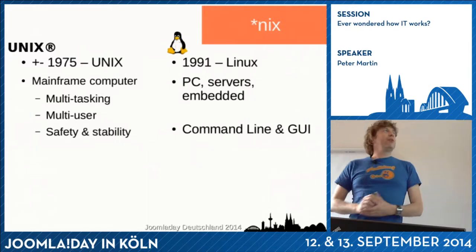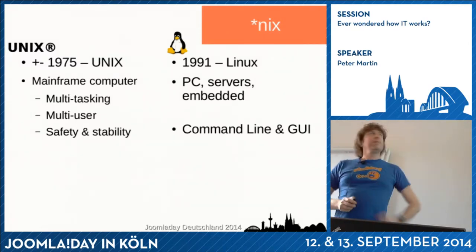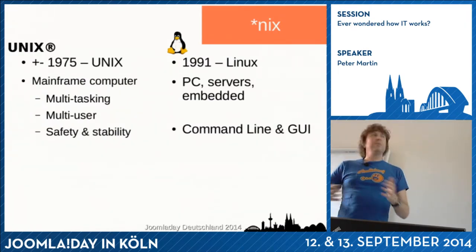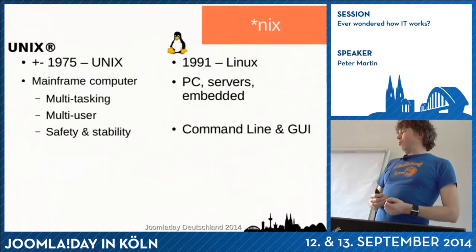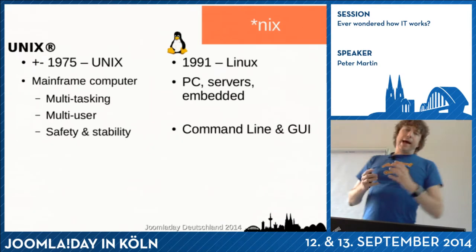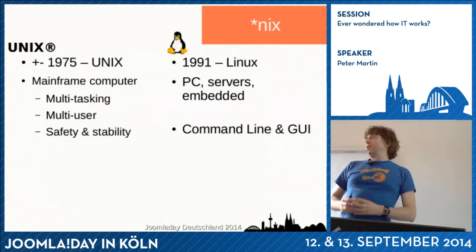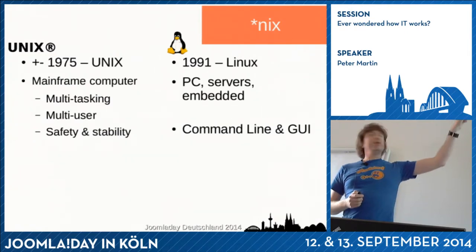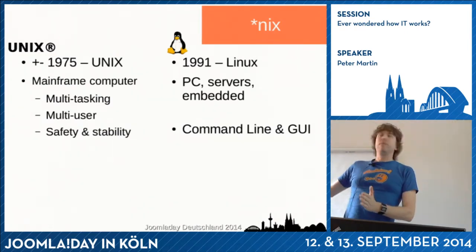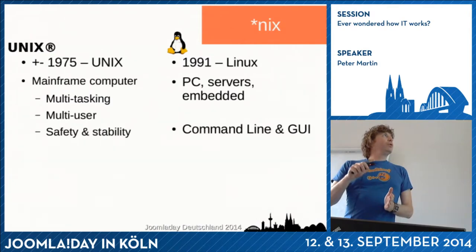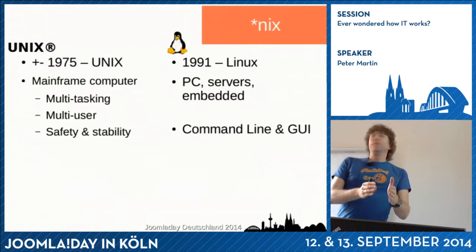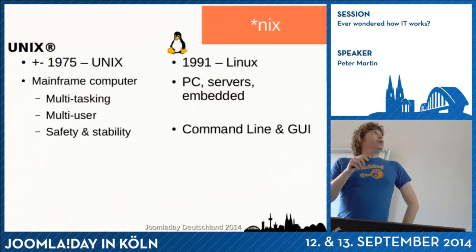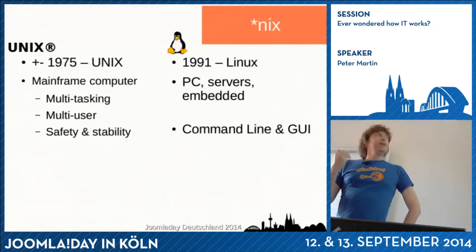In brief, the different kinds of operating systems: the Unix and Linux ones look like each other — they're not the same, but they look like each other. Unix was the operating system developed for the mainframe computer, and because you were working with multiple people at the same time, it had to be multitasking — running different programs at the same time — but also multi-user, so one person could not see what another person was doing. Unix was built with stability and safety in mind.